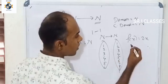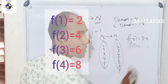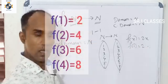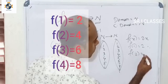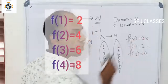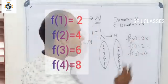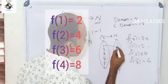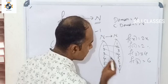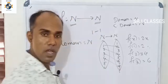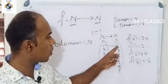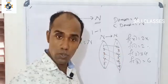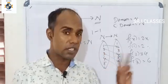Here, f(x) = 2x. So: x=1 maps to 2, x=2 maps to 4, x=3 maps to 6, x=4 maps to 8. Notice that 1, 3, 5 from the domain are not coming up as images — they are not in the range.